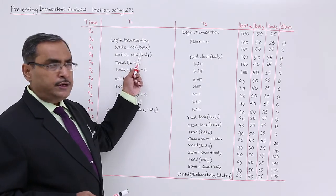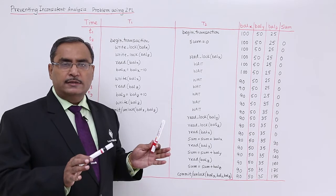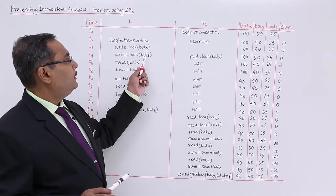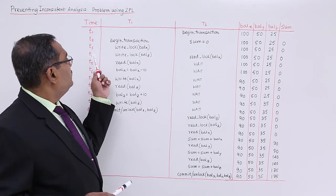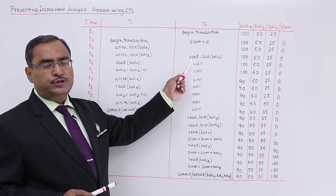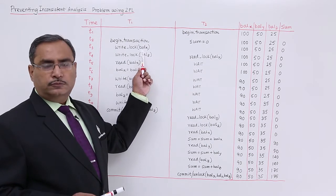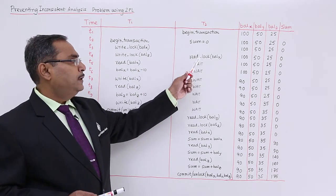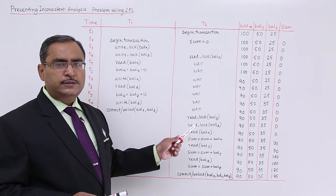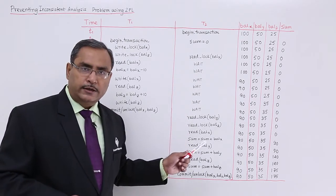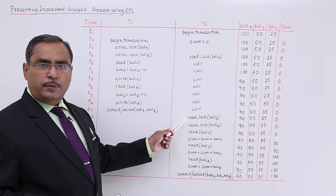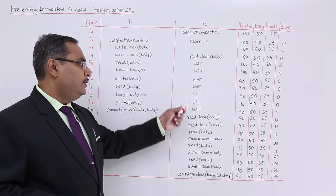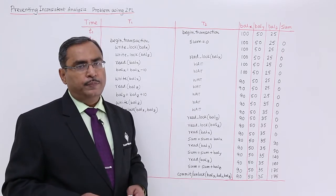Right lock balance X has been requested. Prior to that there is no locking on this balance X, so balance X data item was unlocked. That is why this locking will be granted. At this particular instant T4, this read lock balance X has been requested by transaction T2, but it has been locked in the right lock mode by transaction T1. This request will not be granted and this particular transaction T2 will go for the waiting state until this request is getting granted. This request can only be granted if transaction T1 is going to release this balance X. Then this request will be granted, then it can go for the rest part of the transaction.